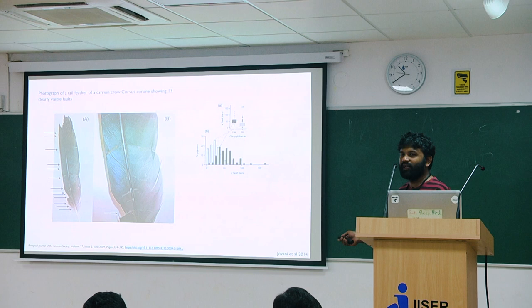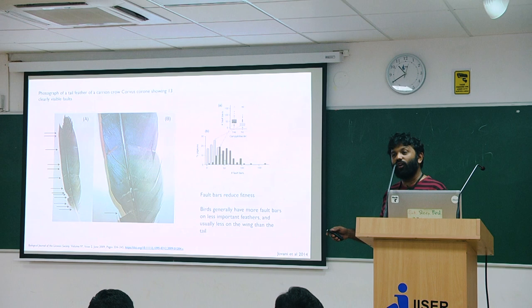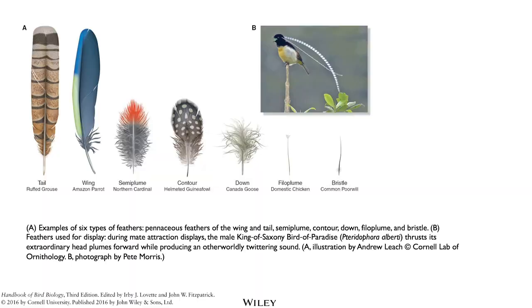Any kind of stress — whether infection, higher temperature, or anything difficult for birds to cope with — can cause fault bars, which are known to reduce fitness. Birds generally have more fault bars on less important feathers. If you have wing feathers and tail feathers, there are generally more fault bars on the tail than the wing, because birds can cope with them more easily.